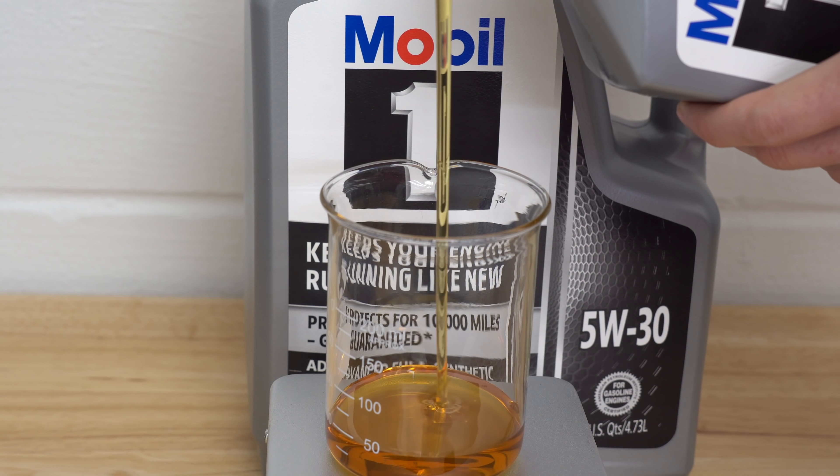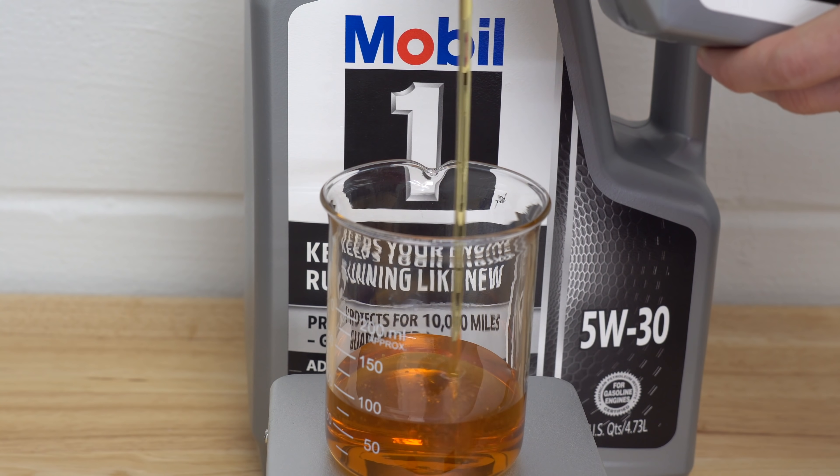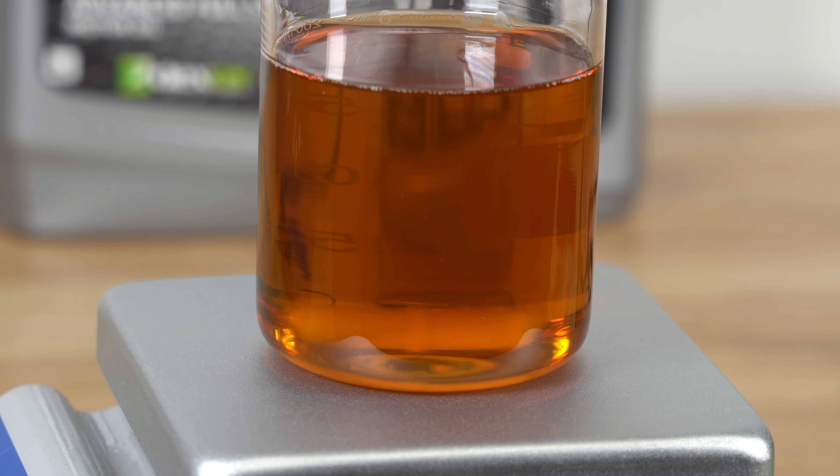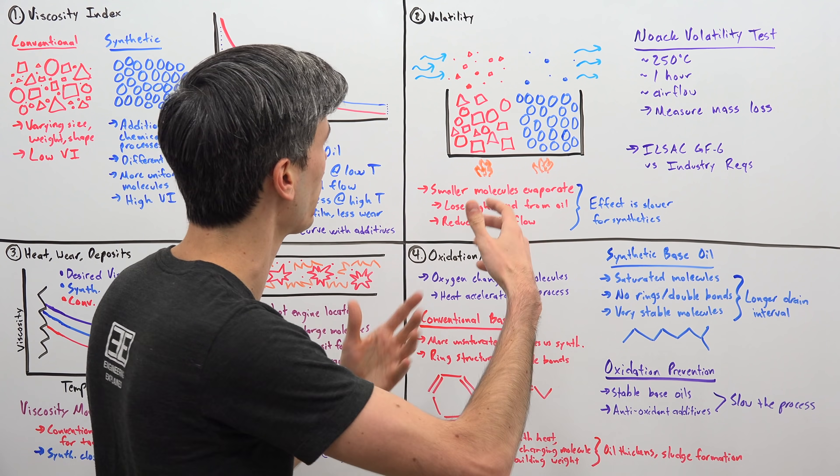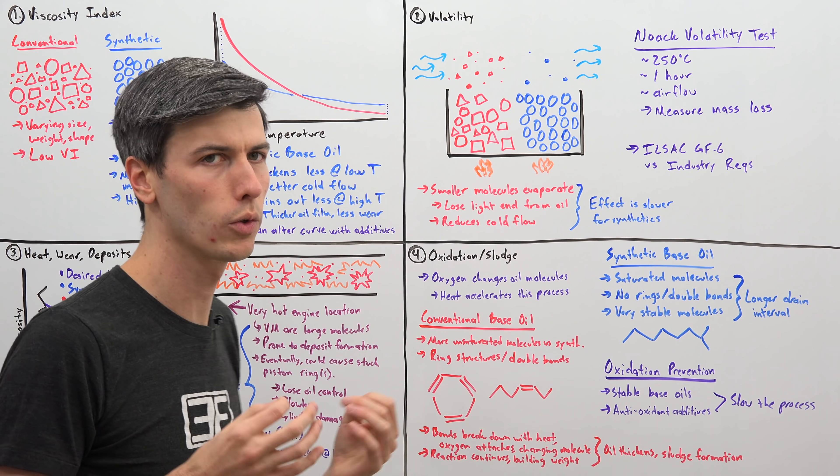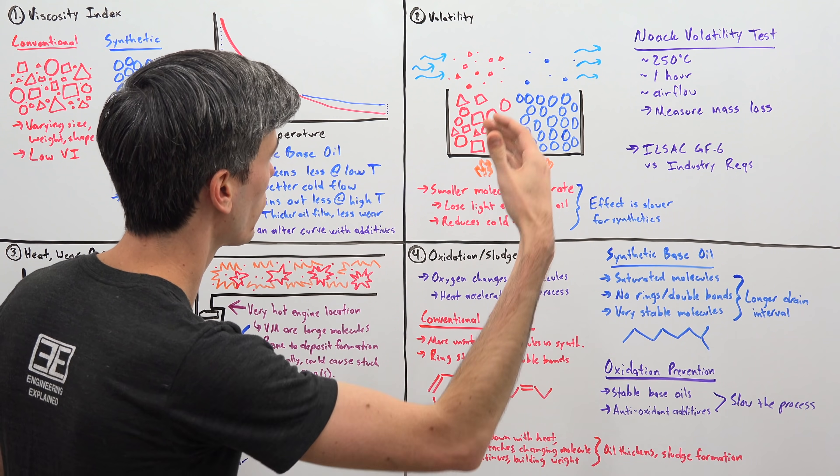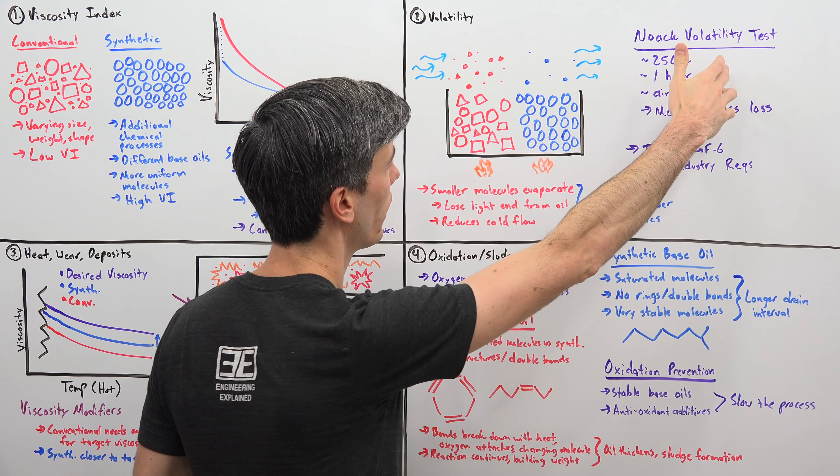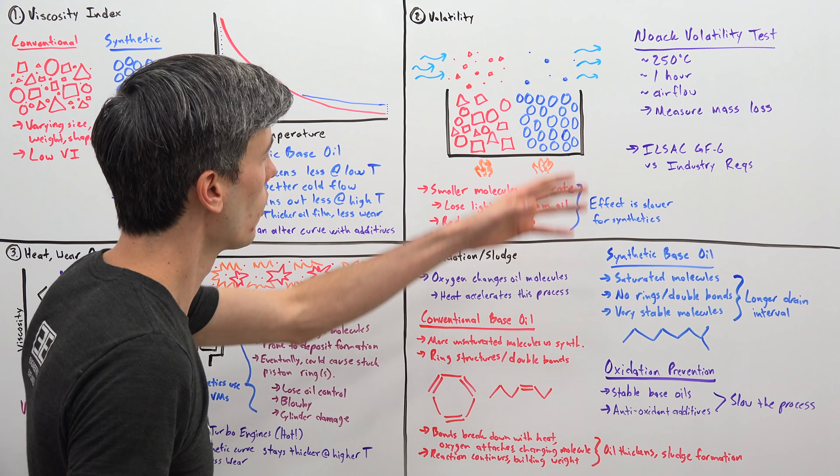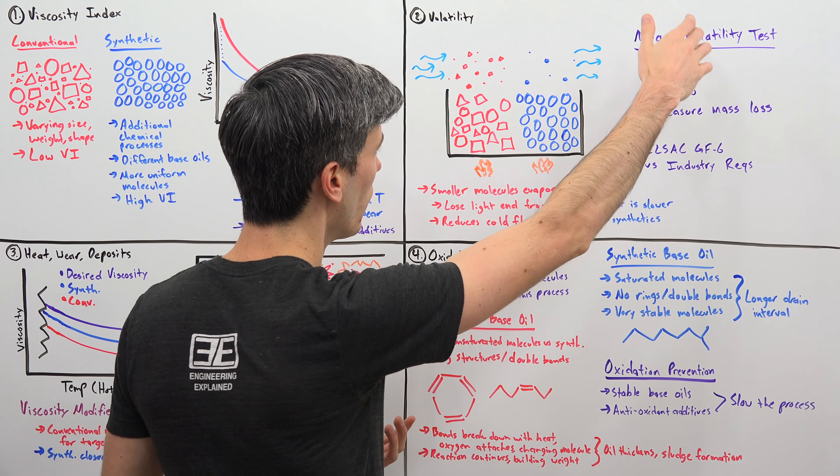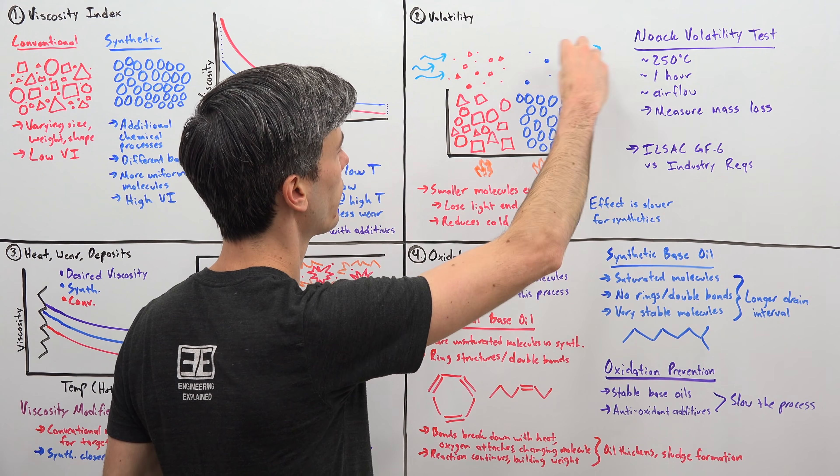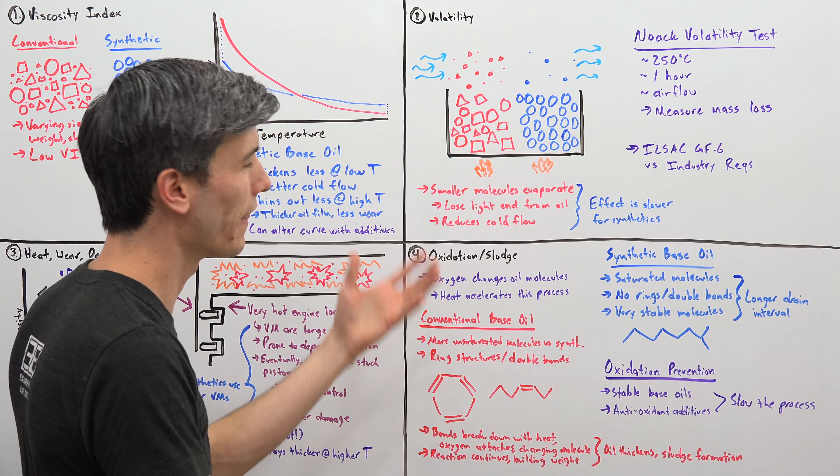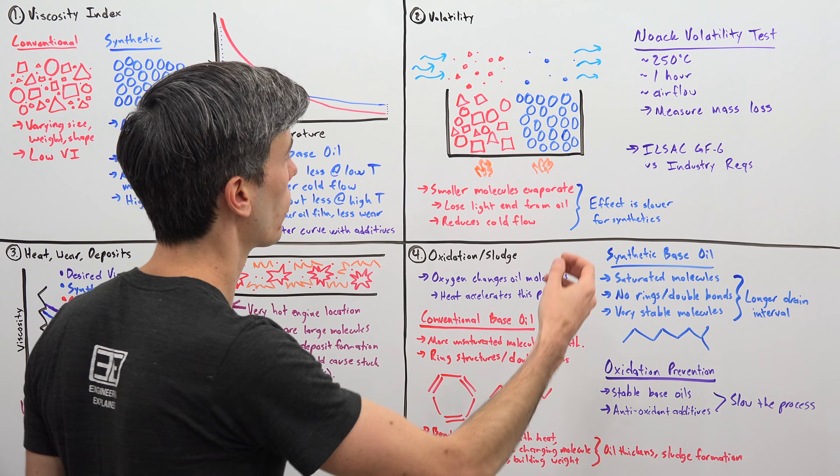Moving on to volatility, of course you want your engine oil to remain a liquid. The challenge is that as you heat that oil up you can have some of it evaporate and you can lose that oil, whether it's through the PCV system or burning through the engine. So you want to make sure that oil remains liquid. There is a test, an industry standardized test, called the NOAC volatility test, where you heat up some oil to 250 degrees for one hour and you have air flow passing over that to capture anything that's evaporating off from the oil. And then you measure the mass loss after that one hour test.